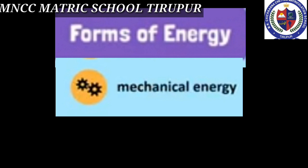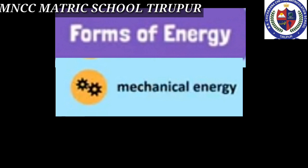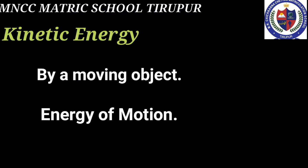Let's discuss about different forms of energy. The first one is mechanical energy. Energy possessed by an object due to its position is called mechanical energy. This mechanical energy can be classified into two types: kinetic energy and potential energy.